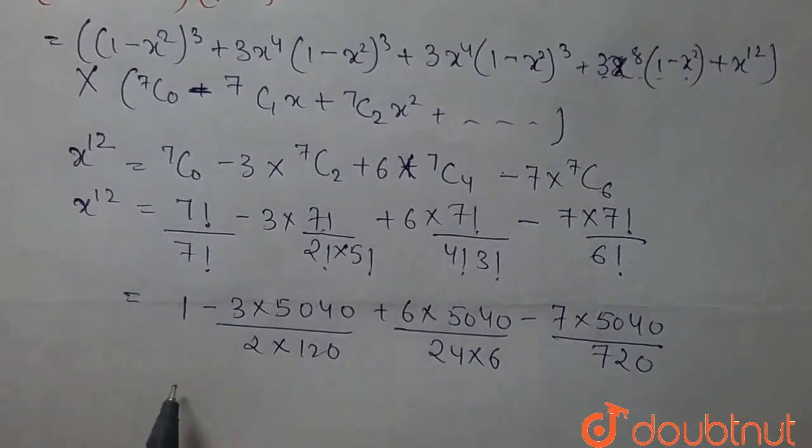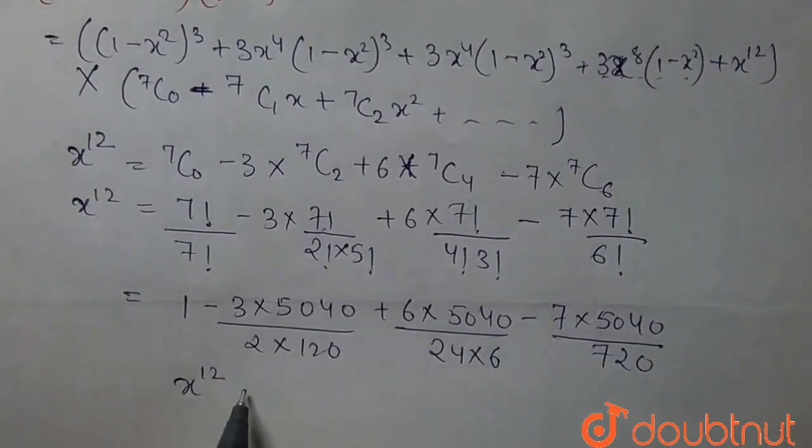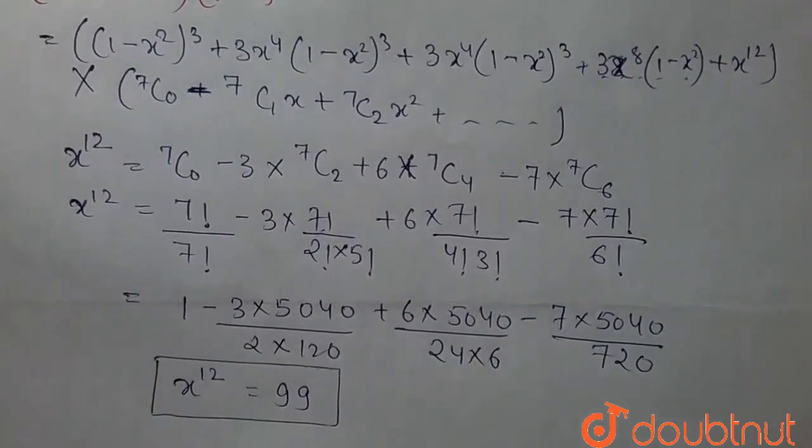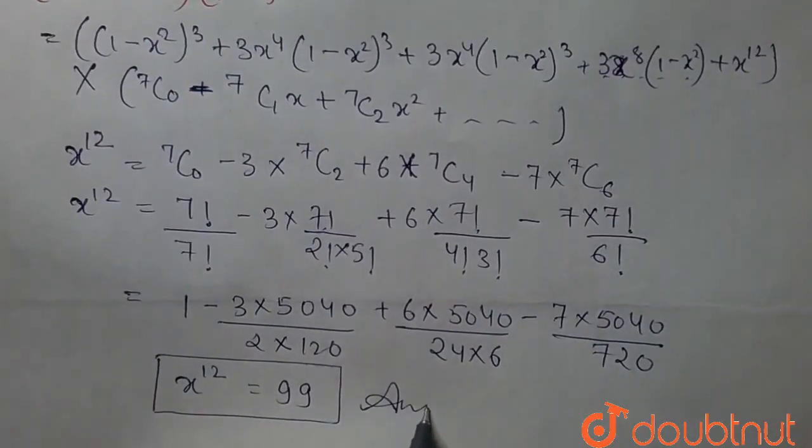So, after solving this numerical part, we get x to the power 12 is equal to 99. So, the coefficient of x to the power 12 is 99. This is our final answer.